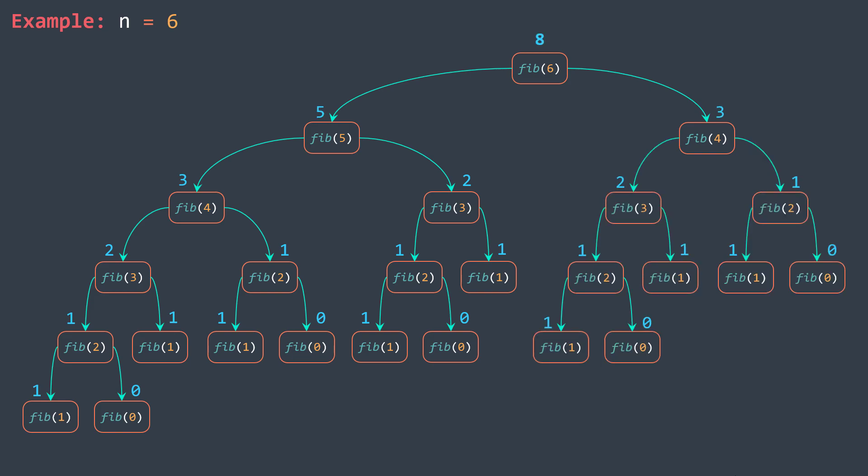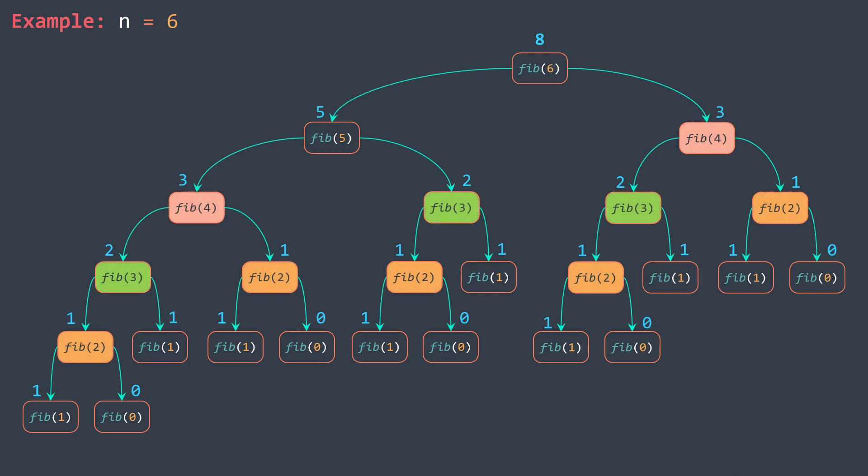But if we look at the recursion tree, we can notice that there are subproblems we solved many times — we say we have overlapping subproblems. The fact that we're doing the same work over and over is slowing down the process. What can we do to avoid it?